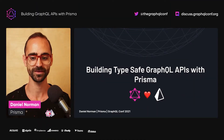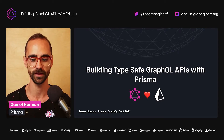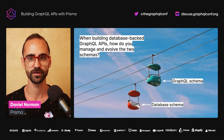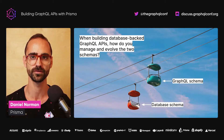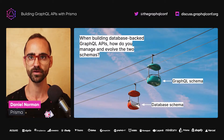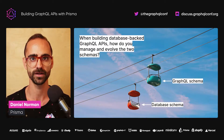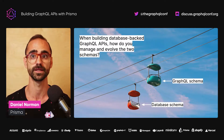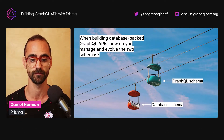Welcome to building type-safe GraphQL APIs with Prisma. Before I get into this talk, I'd like to begin with a question to set the context. When building database-backed GraphQL APIs, how do you manage and evolve the two schemas — those being the GraphQL schema and the database schema?